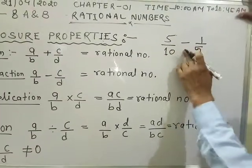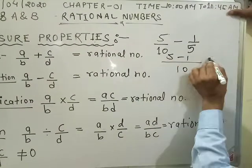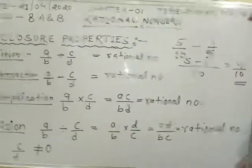Here I put a minus sign. We take LCM 10, 5 minus 1, the answer is 4/10. This is again a rational number.